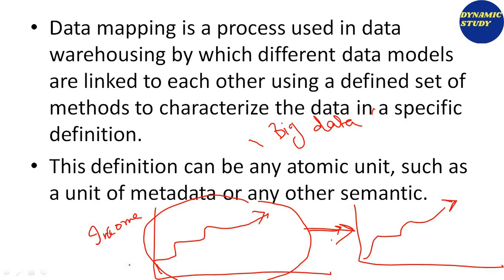Data mapping is a process used in data warehousing by which different data models are linked to each other using a different set of methods of characterizing the data in a specific definition. It involves concepts like data warehousing, data mining, and data mapping, each with different types of methods involved, used in detail for investigation.